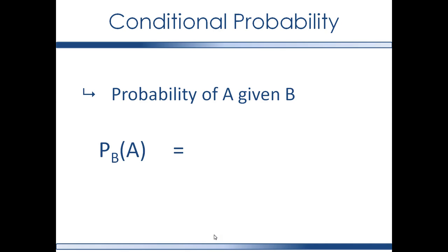The conditional probability is derived by taking the probability of the intersection of A and B. Remember that the event set is a sigma algebra. If sets A and B are elements of the event set, then the intersection of sets A and B is also in the event set.